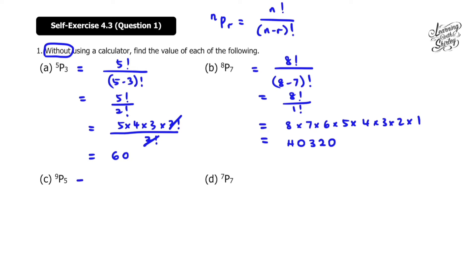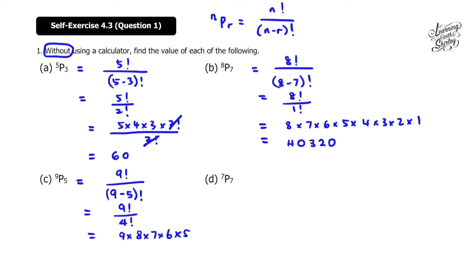Let's look at C. 9P5 equals 9 factorial over (9 minus 5) factorial, so equals 9 factorial over 4 factorial. That equals 9 times 8 times 7 times 6 times 5 times 4 factorial. We can cancel off the 4 factorial top and bottom. So equals 9 times 8 times 7 times 6 times 5, and the answer is 15,120.